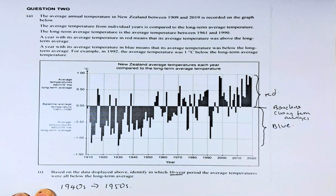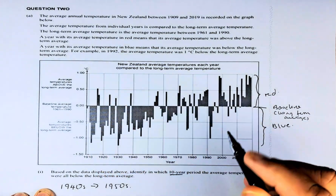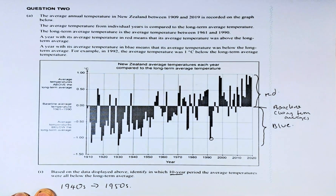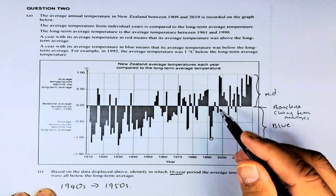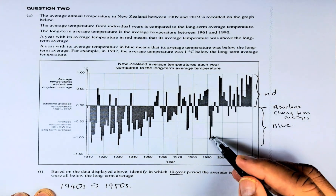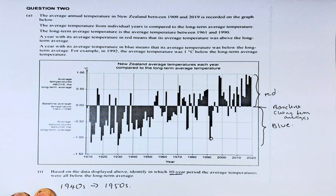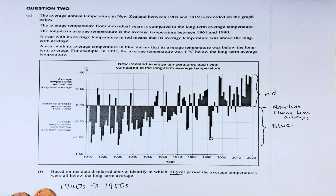For example, in 1992 — this point here — the average temperature was 1 degree below the long-term average temperature.